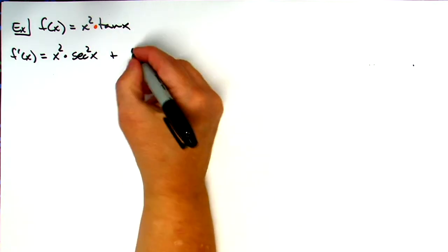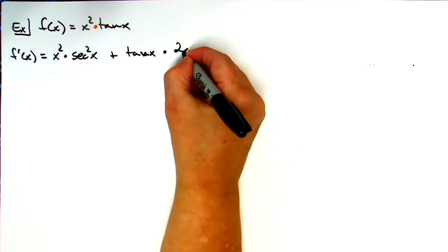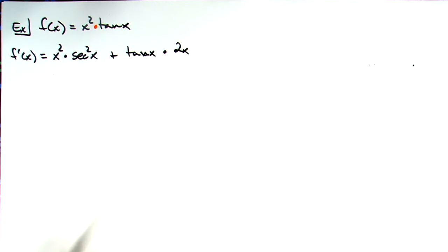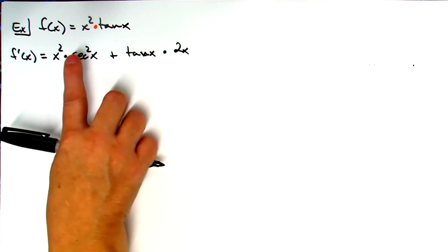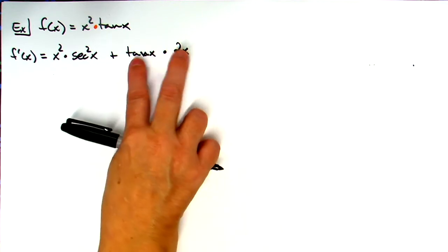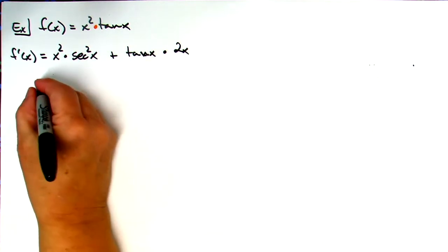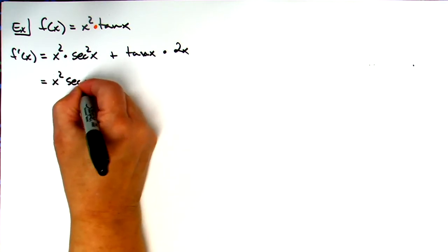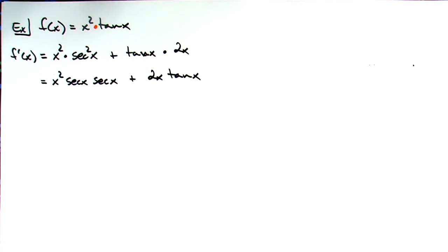Plus the second function, which is tangent, times the derivative of the first. Derivative of x squared is 2x — that one's easy. So technically that is our first derivative. But let's rewrite this to make the second derivative a little bit easier. If we break this up and show it as three things being multiplied together, we can use the extended product rule. So I'm going to rewrite as x squared times secant x times secant x, plus 2x times tangent x.